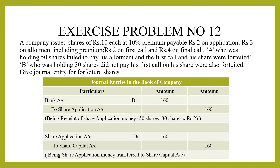These shares have been forfeited. For forfeited shares, we write journal entries. First, application money was received — cash is coming in, so bank account is debited. The purpose of the cash received is for share application, so we credit share application account. Bank account debit to share application account — ₹160. That application money then transfers to share capital: share application account debit to share capital account.